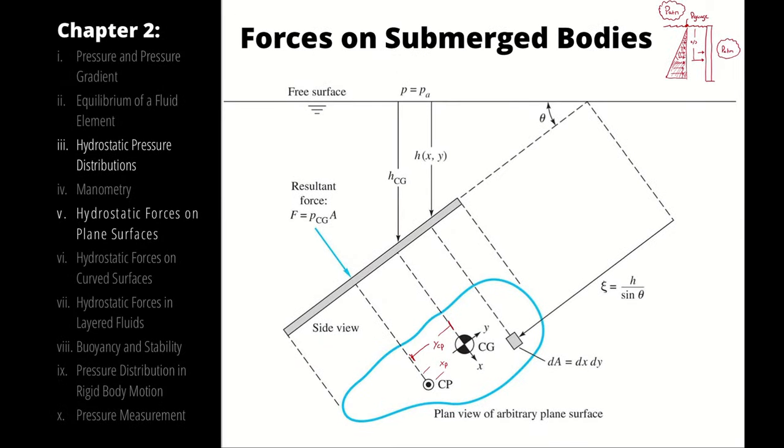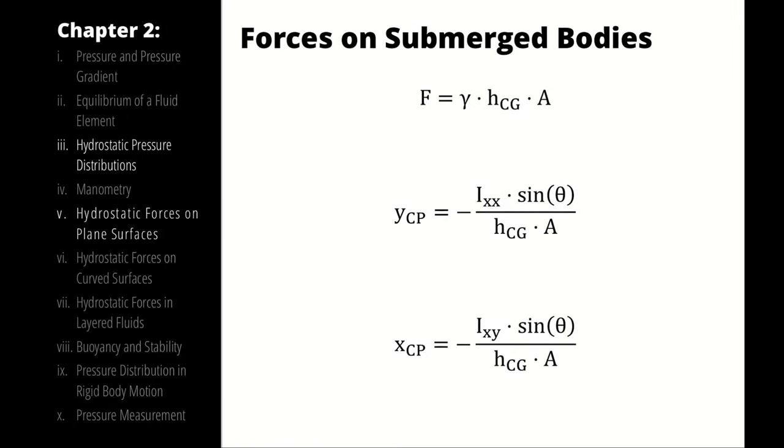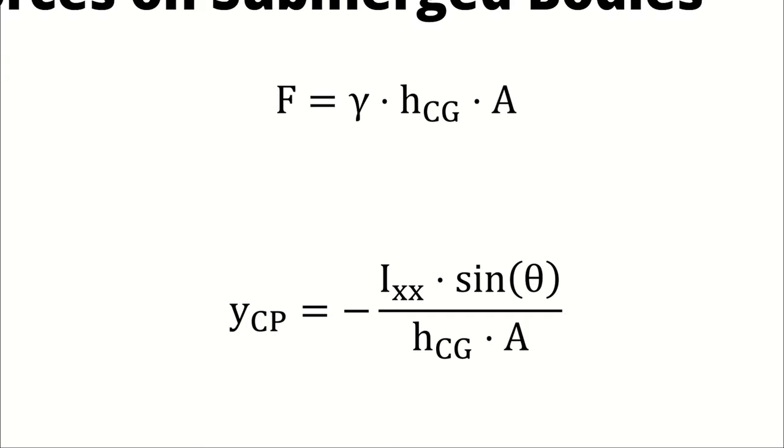Therefore, we describe first the magnitude of the force applied by the fluid pressure by taking the specific weight of the fluid multiplied by the height from the fluid surface to the center of gravity of the face multiplied by area. Note that this is just the gauge pressure we know and love, because specific weight is density of the fluid multiplied by gravity, and then we multiply by height—that's the ρgh equation—multiplied by area, so pressure multiplied by area is force.